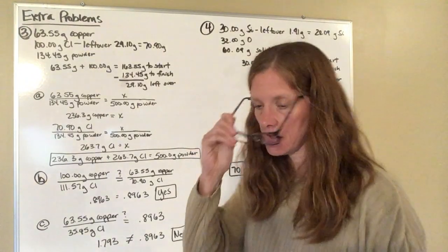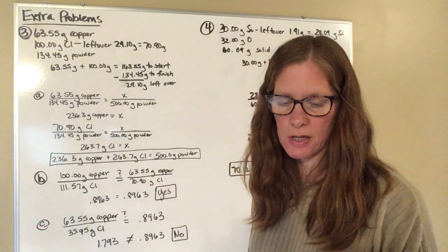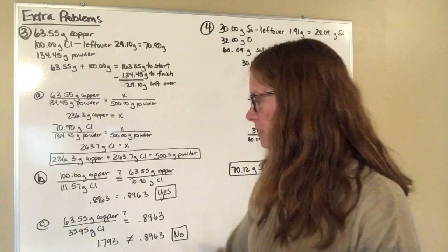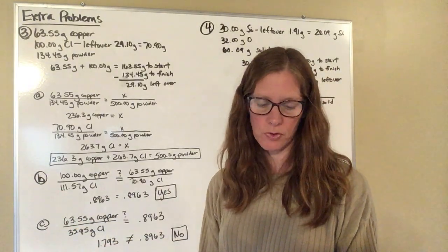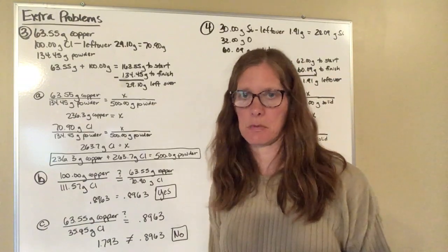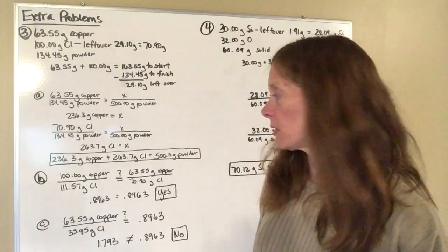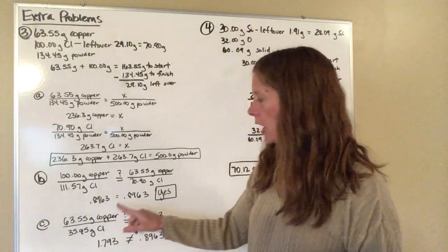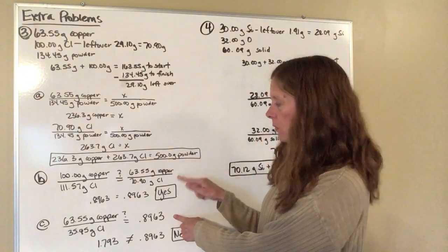In part C, basically same song second verse, another chemist combined 63.55 grams of copper with 35.45 grams of chlorine gas to make a solid. There are no leftovers. Is this the same compound as what was made in part A? And so again, I'm going to take the ratio of copper to chlorine. Now here, because in part B, I already figured this out once. I thought, well, I already know what that comes up to.